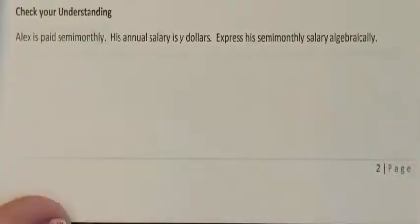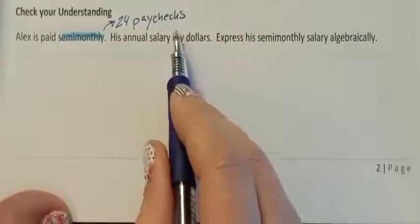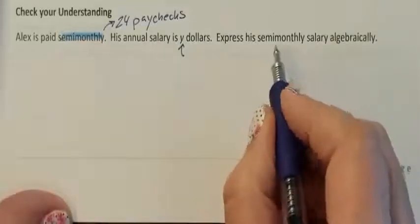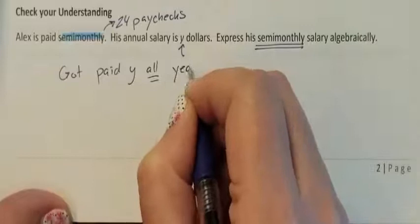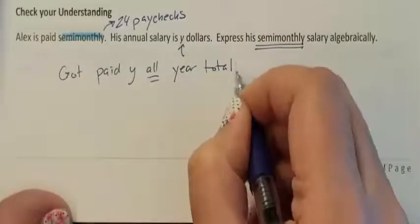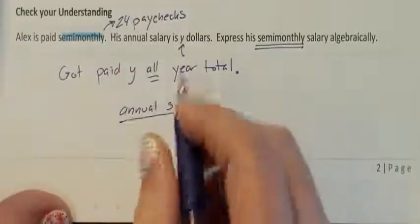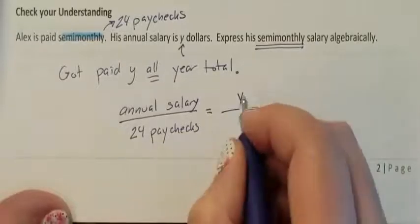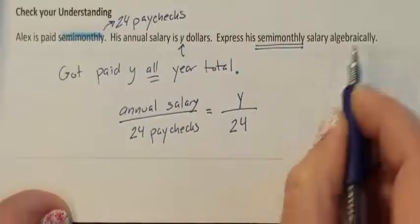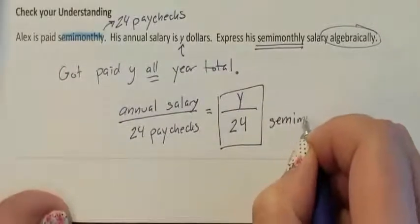Let's check for understanding. Alex is paid semi-monthly, so he gets 24 paychecks in one year. His annual salary is Y dollars — meaning after all 24 paychecks, his total was Y. We want his semi-monthly salary, so we take his annual salary Y and divide it equally among all 24 paychecks. The algebraic answer is Y divided by 24, which is his semi-monthly salary.